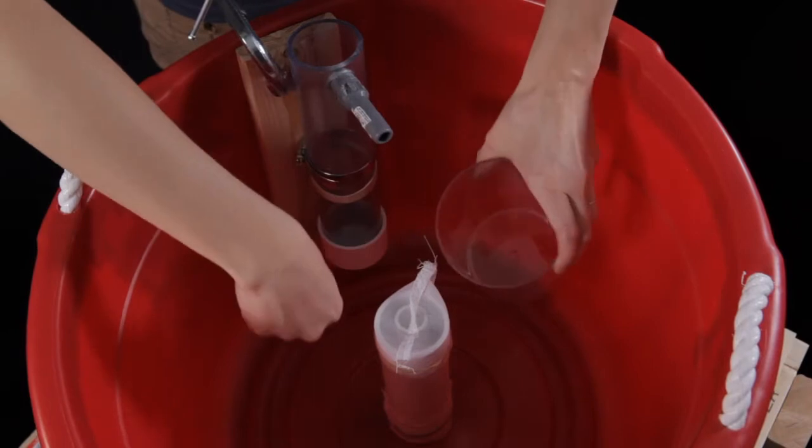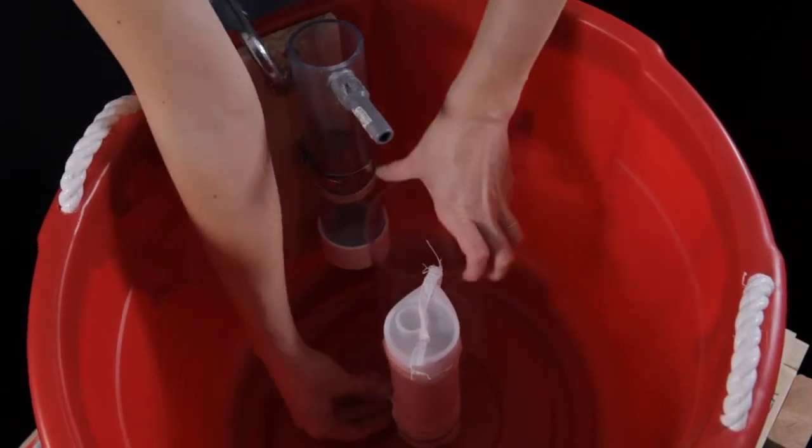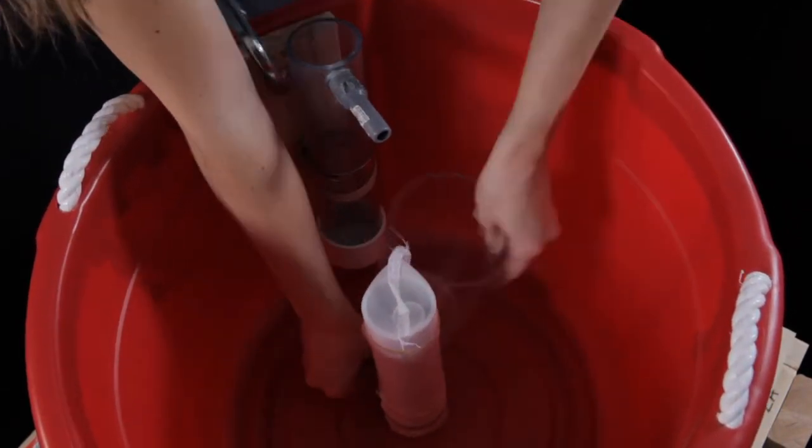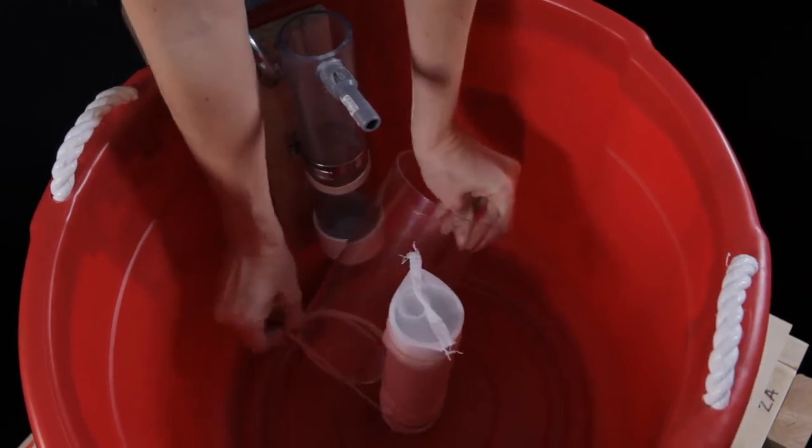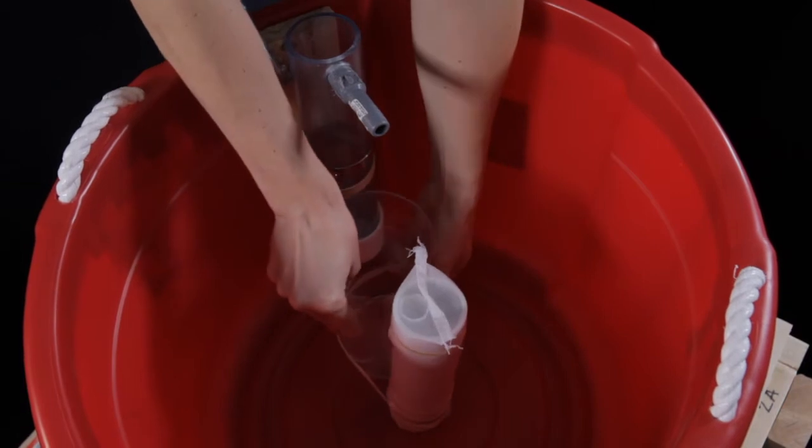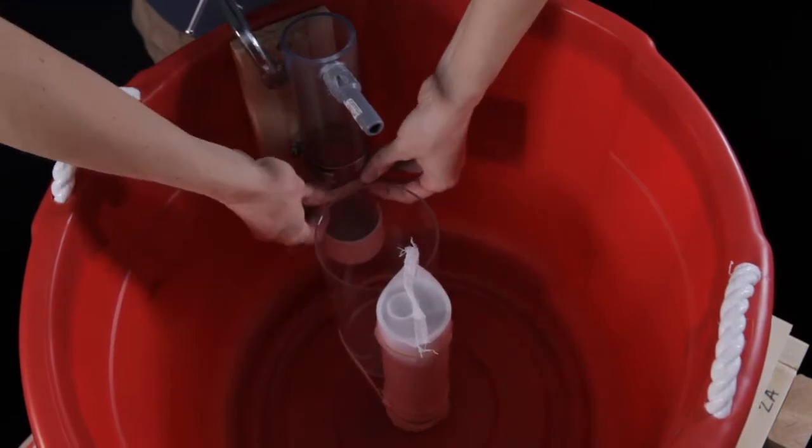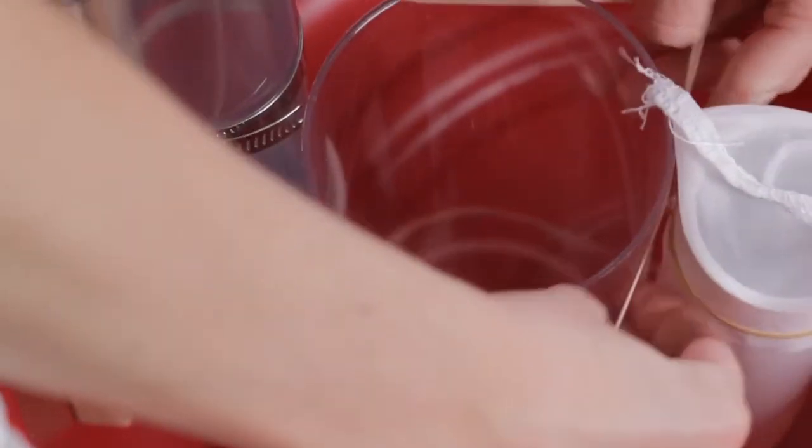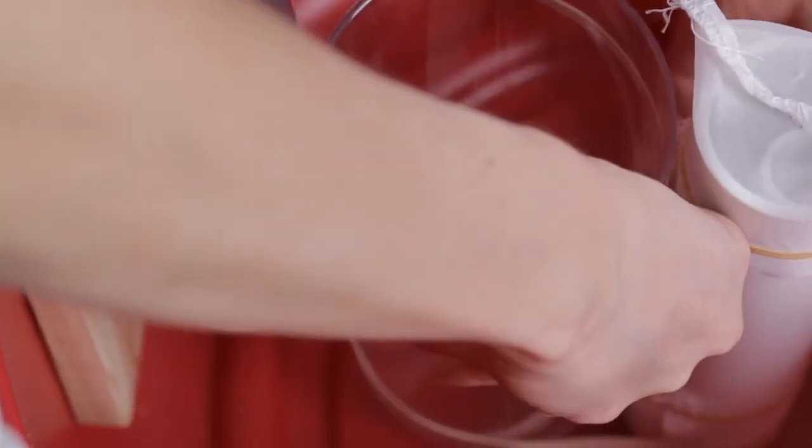The next thing I'm going to do is add the fry chamber, which is this clear tub, using rubber bands. There's a big rubber band around the stand pipe that you'll put at the bottom of the fry chamber, and another one that's in the middle of the egg chamber, that you'll put around the top of the fry chamber.